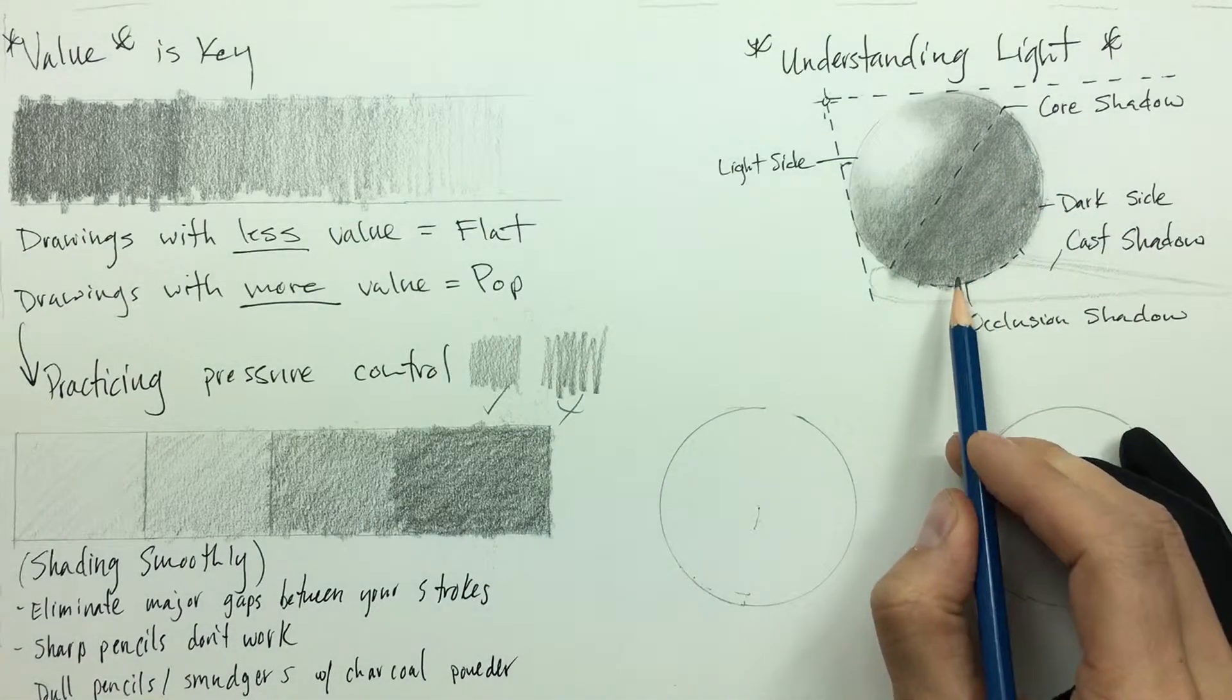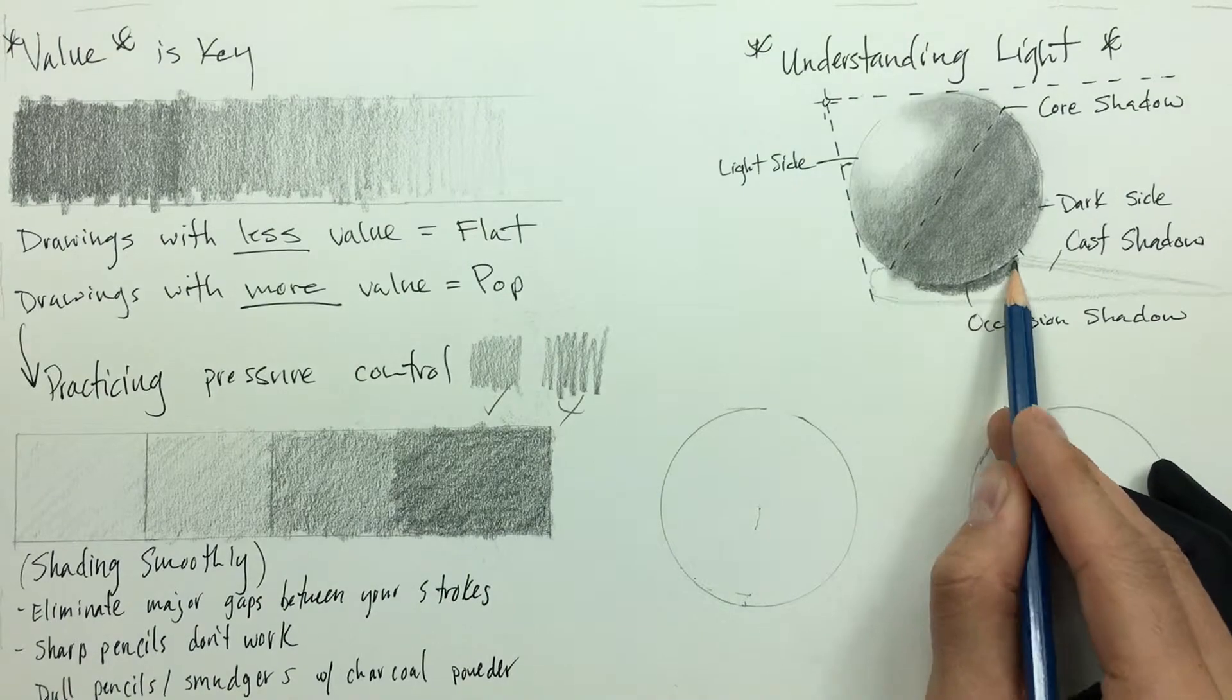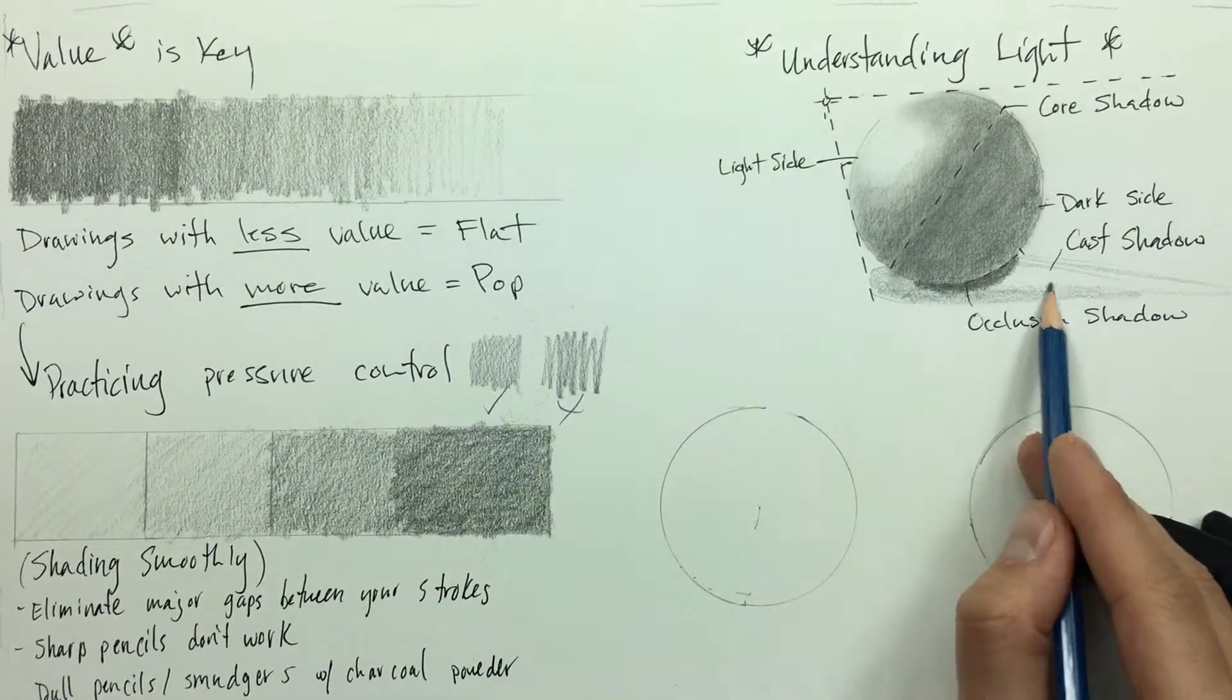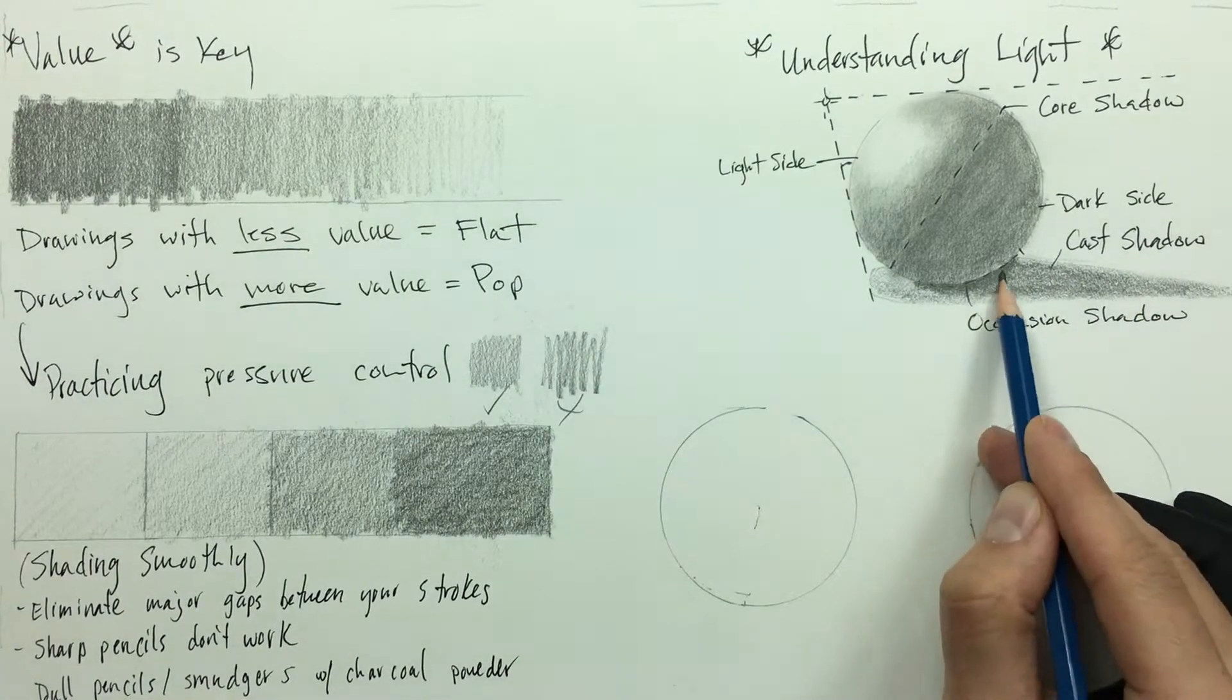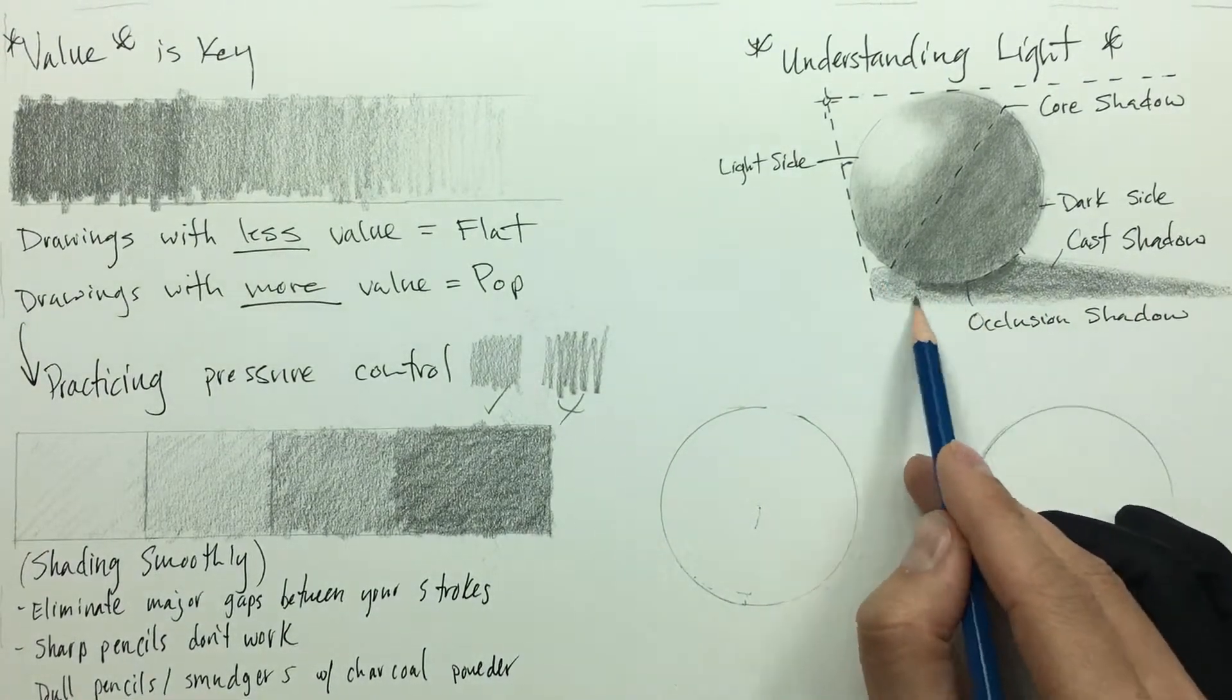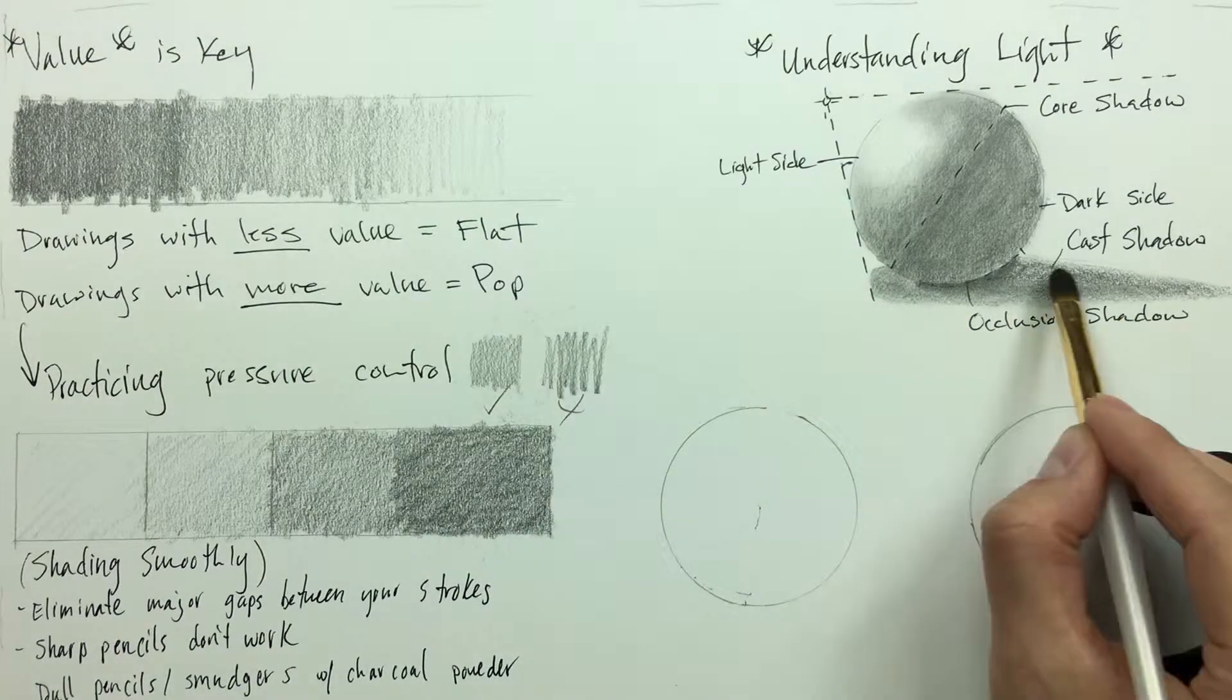The occlusion shadow is a dark area between the sphere and the table. The cast shadow is dark but it's not nearly as dark as the occlusion shadow, typically because there is little to no light at all hitting the occlusion shadow. So what we're going to do is take our brush here and soften this all up.